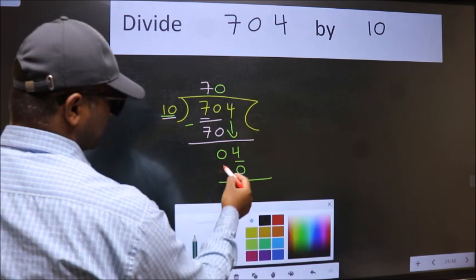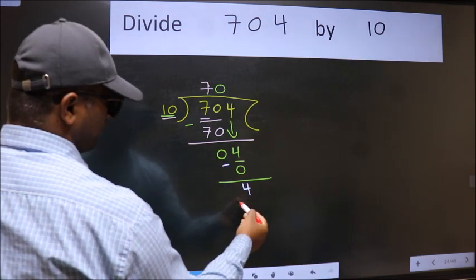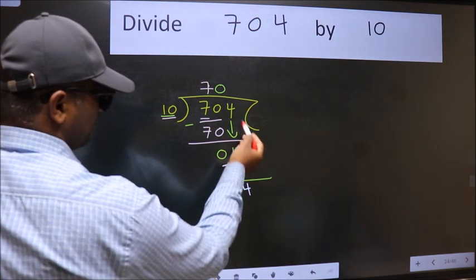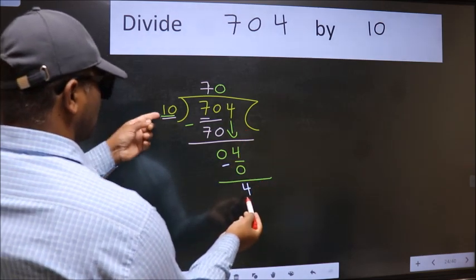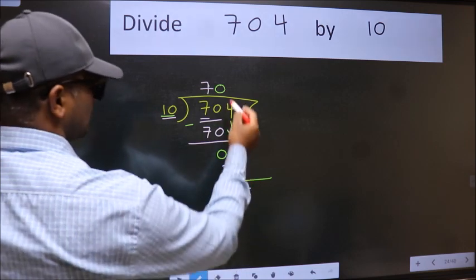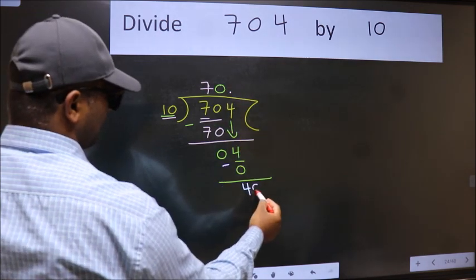Now we subtract, we get 4. Over here we did not bring any number down. And 4 is smaller than 10. So now we can put dot and take 0.